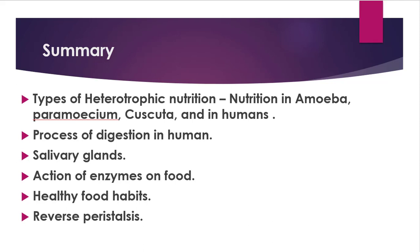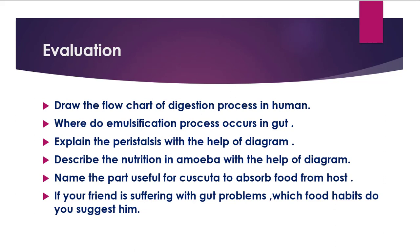To summarize this lesson, we have seen: types of heterotrophic nutrition; nutrition in amoeba, paramecium, Cuscuta, and humans; the process of digestion in humans; salivary glands; action of enzymes on food; healthy food habits; and reverse peristalsis.